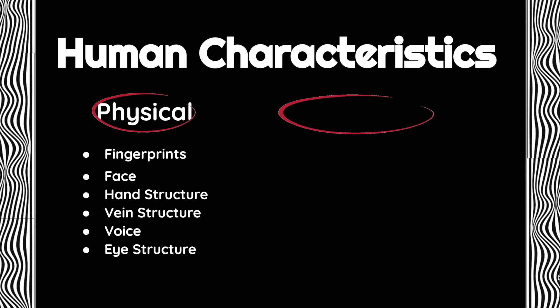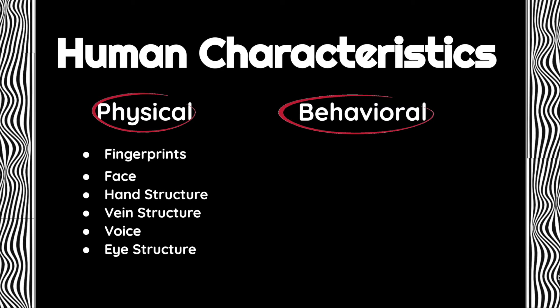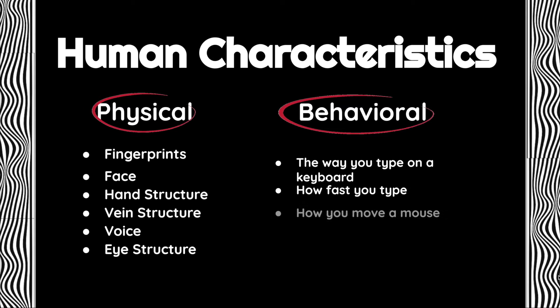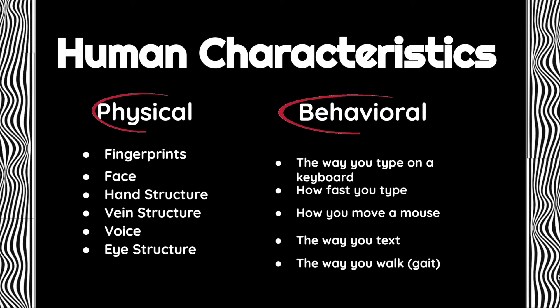The second category of characteristics in biometrics is behavioral. These are the things you do, like the way you type on a keyboard, how fast you type, how you move a mouse, the way you text, or even the way you walk — your gait.